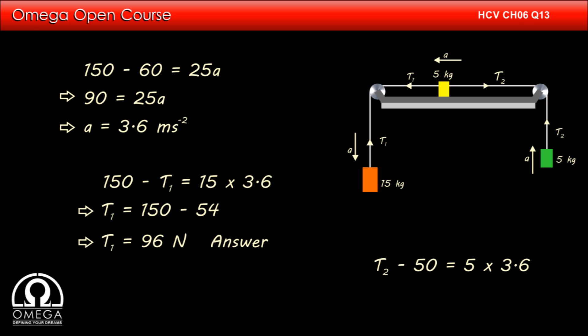Putting the value of acceleration in equation 3, we get T2 minus 50 equals 5 into 3.6. Simplifying, we get T2 equals 68 newtons. This is our answer.